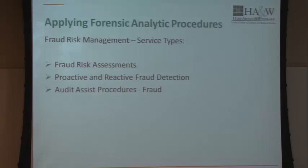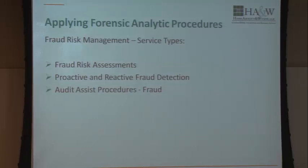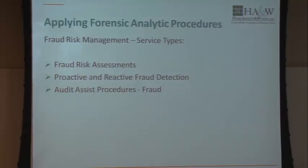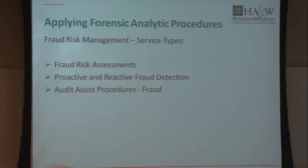Fraud risk service types include fraud risk assessments, proactive and reactive fraud detection, and audit assist procedures for fraud. Proactive is tests designed to prevent fraud before it occurs. Reactive is — we think fraud has occurred, now we need to test for it. The procedures are mostly the same; it's just a matter of when you perform them. Audit assist procedures are things done during the audit that, as a firm, we could help clients with to prevent fraud.